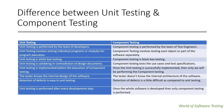The first difference is unit testing is performed by the team of developers — it is done by the developers, not by the test engineers. Component testing is performed by the team of test engineers, so the test engineer will perform component testing.